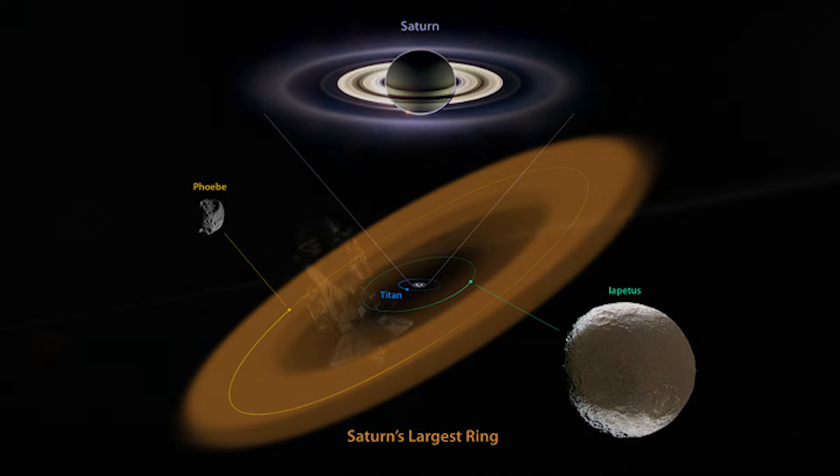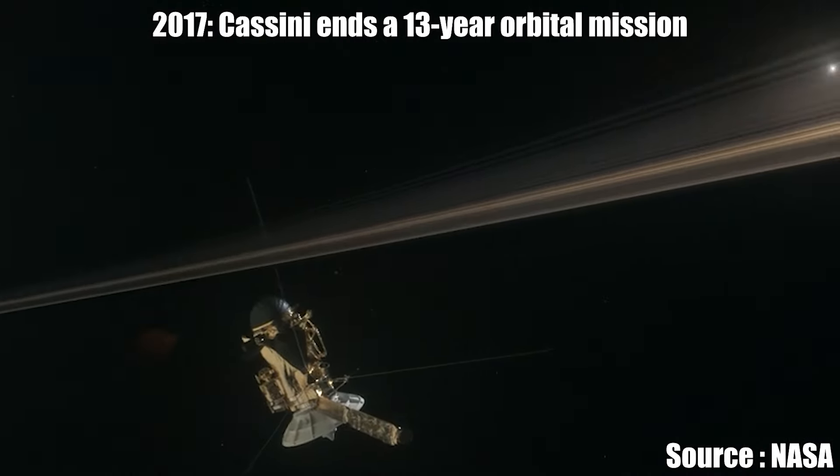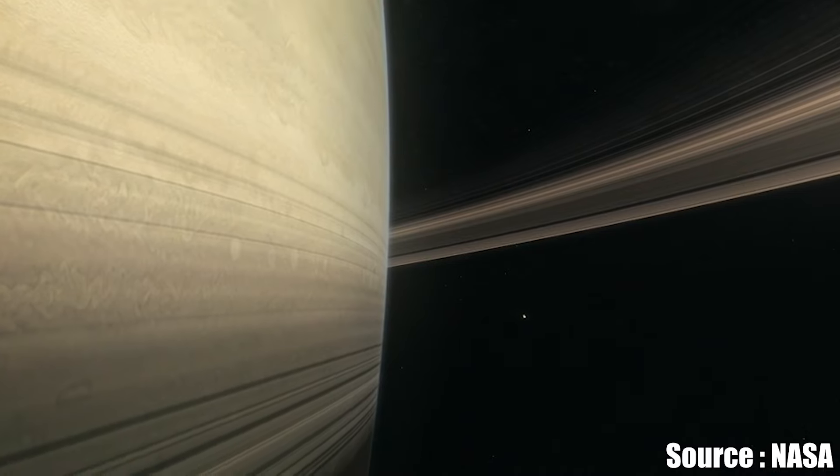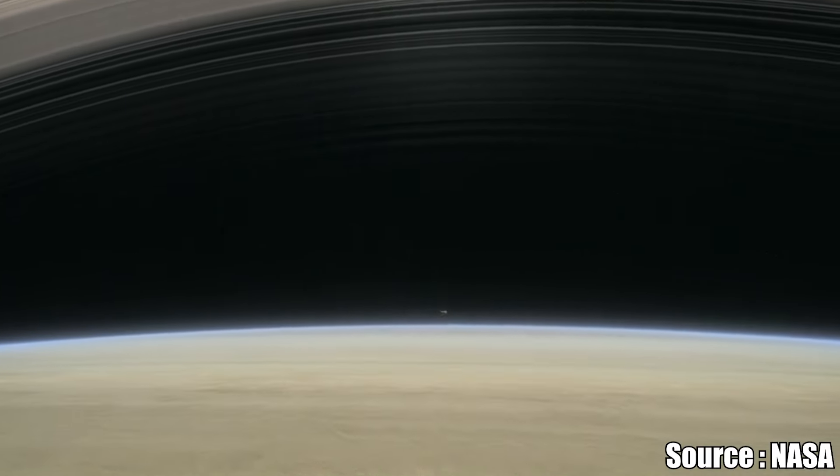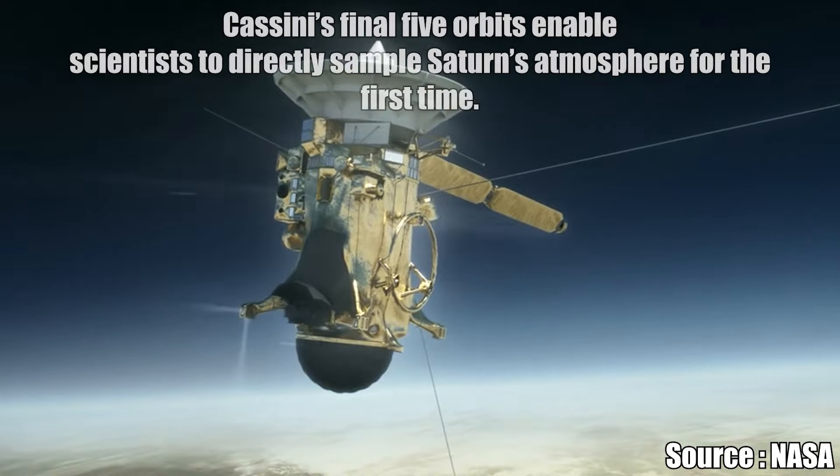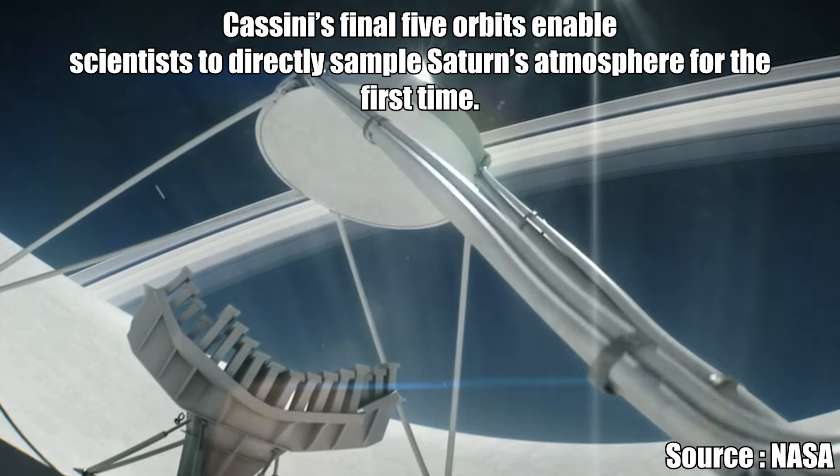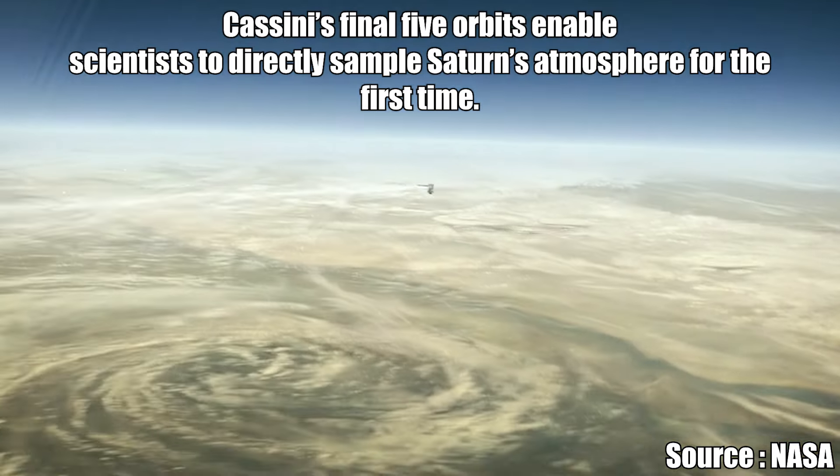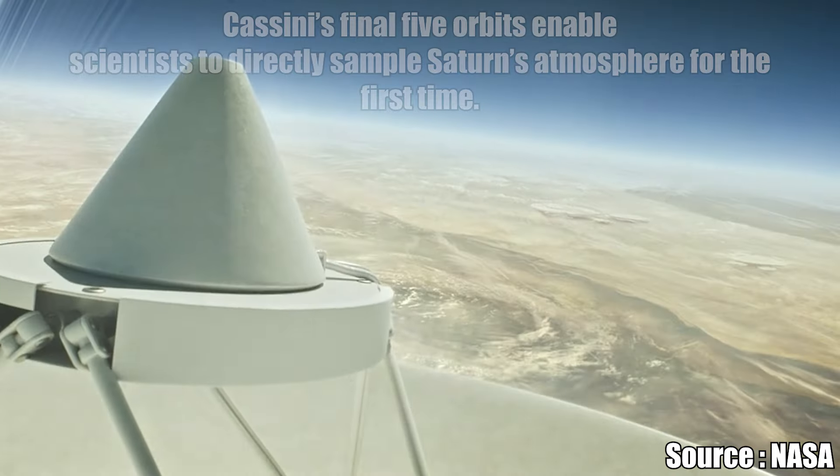In 2017, Cassini ended a 13-year orbital mission with a planned plunge into Saturn's atmosphere, sending back science data to the last second. Cassini's final five orbits enabled scientists to directly sample Saturn's atmosphere for the first time.